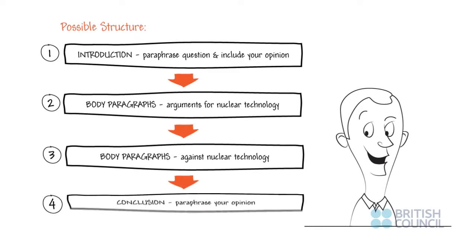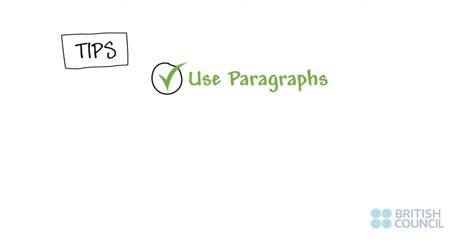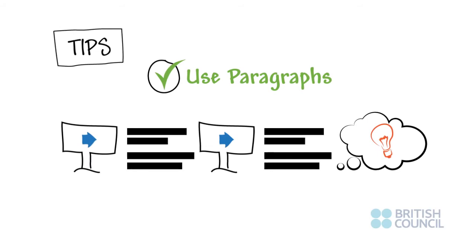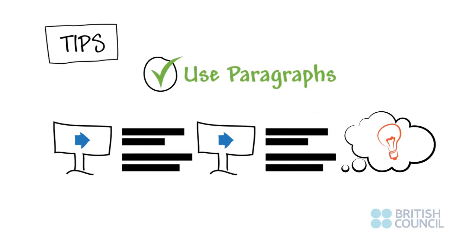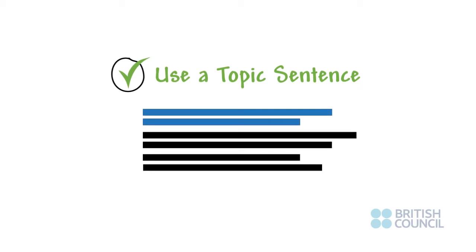Plan your essay like this before you start writing. It's important to use paragraphs — these give structure to a piece of writing. Think of paragraphs as a signpost telling whoever reads your work where your ideas are going and when you are moving on to a different point. Since paragraphs are used to explain your argument in stages, express one idea or set of ideas in each paragraph. A good way to start a paragraph is with a short, simple sentence that introduces the main idea of the paragraph. Teachers often call this a topic sentence.